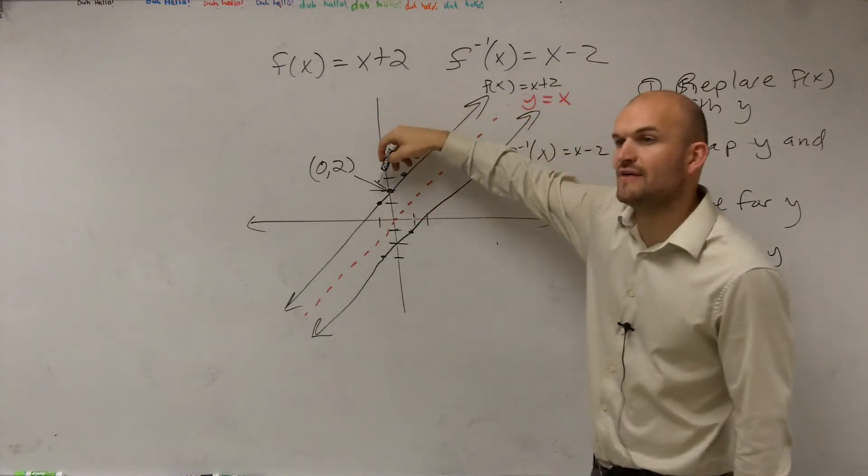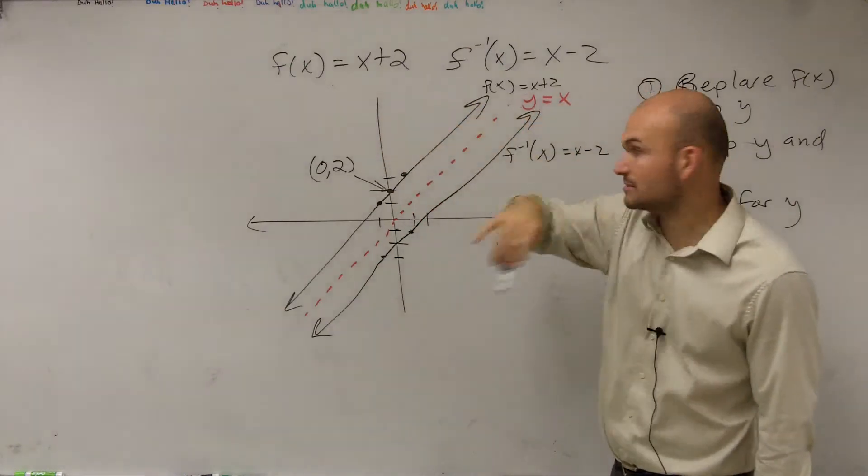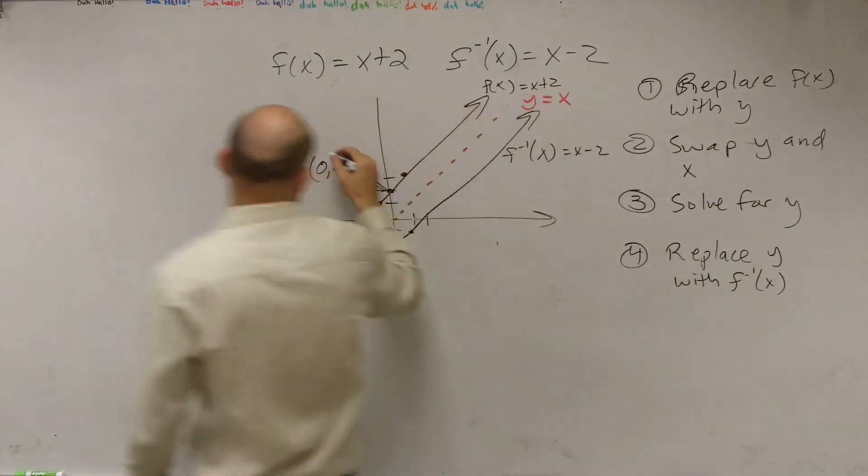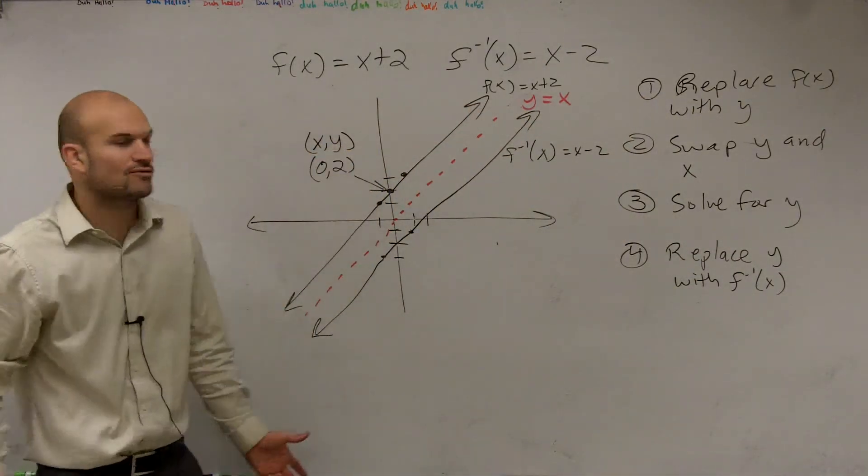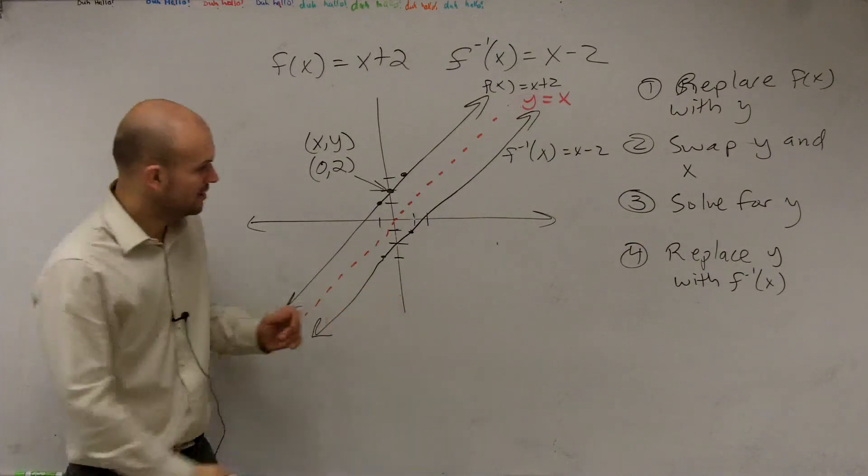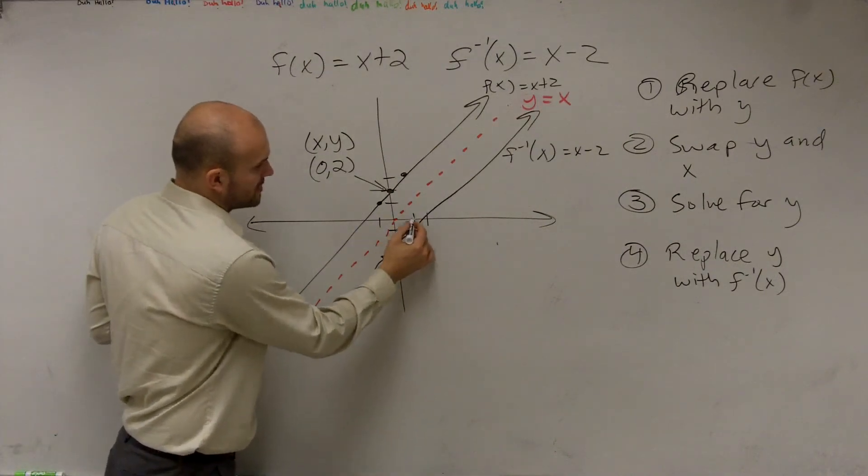On my function f of x, you guys are going to be the next to kind of move away. So if you guys look at my f inverse of x, I have xy. Now, I know I didn't graph the most beautiful function over here, but if this one's up 1 over, and this one up 2,